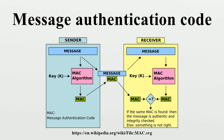A MAC is unforgeable if for every efficient adversary A, PR[K←G, A^S(1^N) = accepted] < negl, where S denotes that A has access to the oracle S, and the query set denotes the set of queries on S made by A, which knows N. Clearly, we require that any adversary cannot directly query the string X on S, since otherwise she can easily obtain a valid tag.